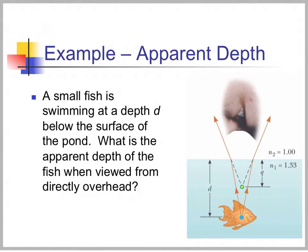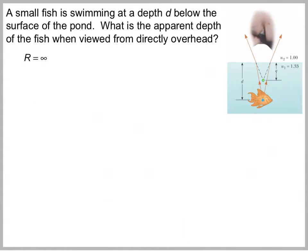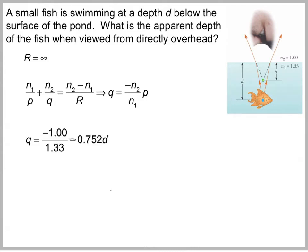So that means if I look at things underwater, their location is actually different than what I see. For example, let's say I have a small fish swimming at some depth D below the surface of a pond. What's the apparent depth of the fish when I look at it from directly overhead? This is a flat surface, so R equals infinity. Plugging into our equation, Q equals minus N2 over N1 times P. Plugging in values, Q equals minus 1 over 1.33, which is negative 0.75 D. So when we look at the fish, it looks closer than it actually is — about 75% closer — which is why when we grab for something underwater, we often miss.